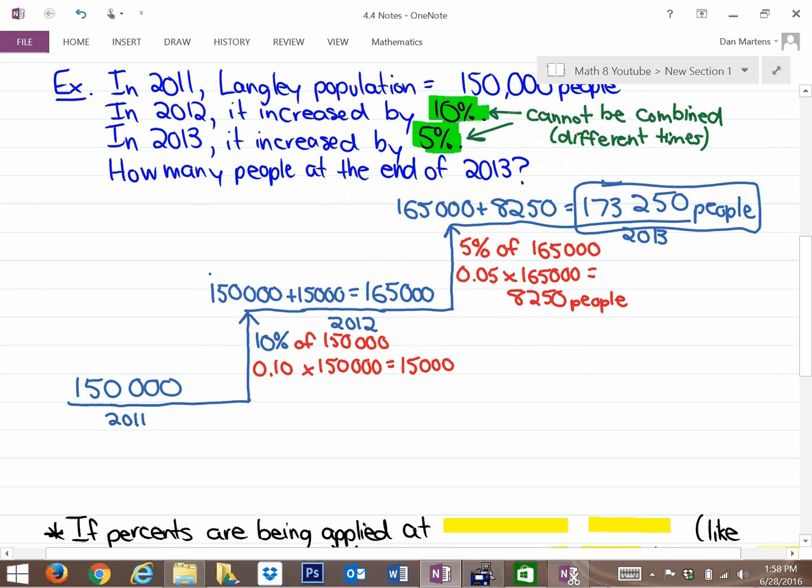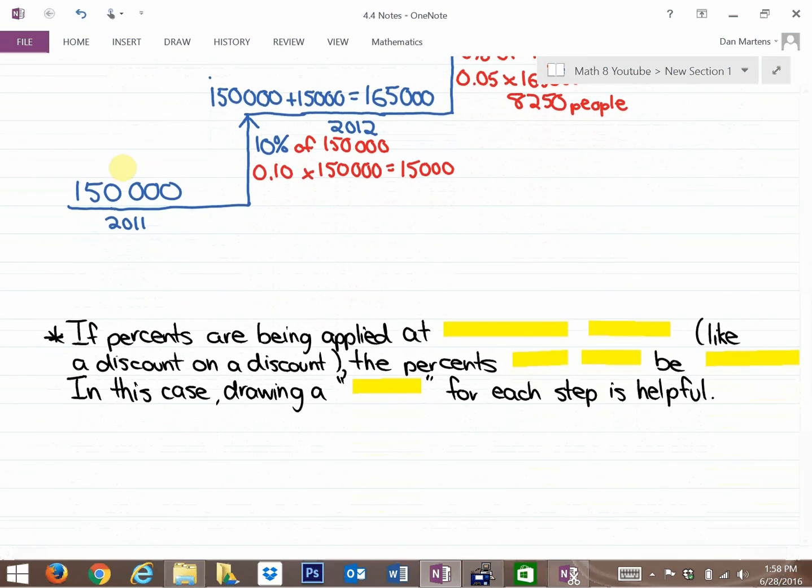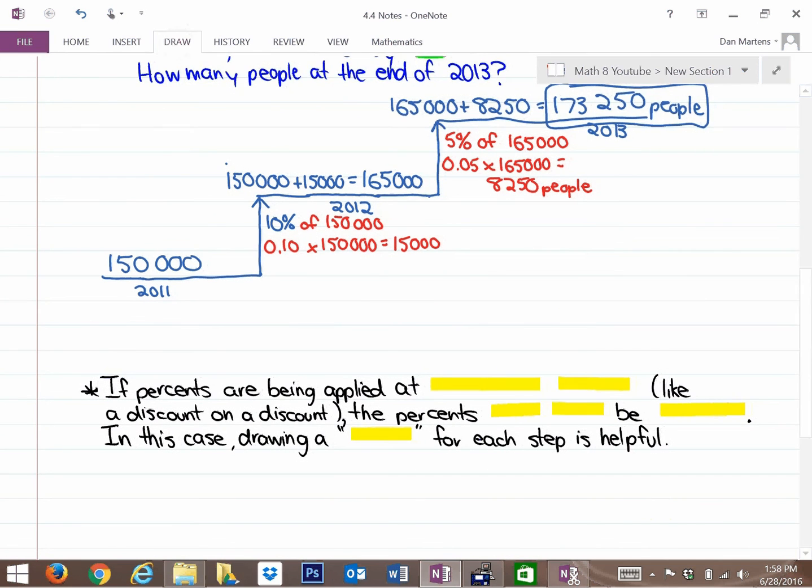So that was a lot of work, and there's a lot of different ways to think around these problems. But the big idea here, the key idea that you're going to write down now, is the following: If percents are being applied at different times, like a population increase on a population increase, or a discount on a discount, the percents cannot be combined because the percents are being applied to different values at different times. You have to treat this more in steps.